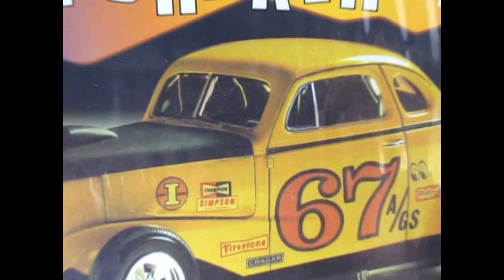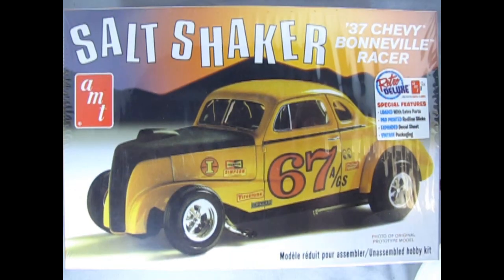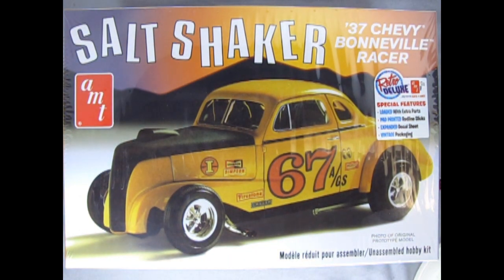And now race fans let's go back to Bonneville salt flats in Utah with this amazing 1937 Chevy salt shaker Bonneville racer. This is a retro deluxe kit with special features loaded with extra parts, pad printed red line slicks, expanded decal sheet and vintage packaging.